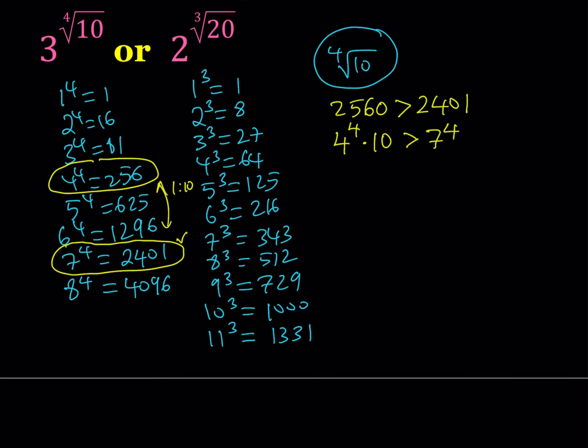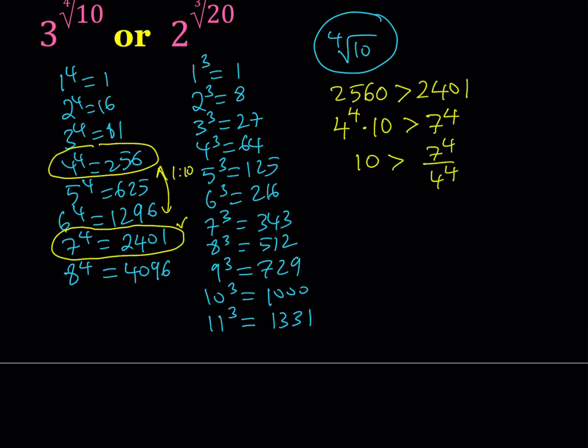Hopefully, you already figured out what I'm about to do. I'm going to isolate the 10 here and then write this as 7 over 4 to the 4th power. You can write it as 7 to the 4th divided by 4 to the 4th. And now, if you take the 4th root of both sides, this is going to give you a nice approximation for the 4th root of 10.